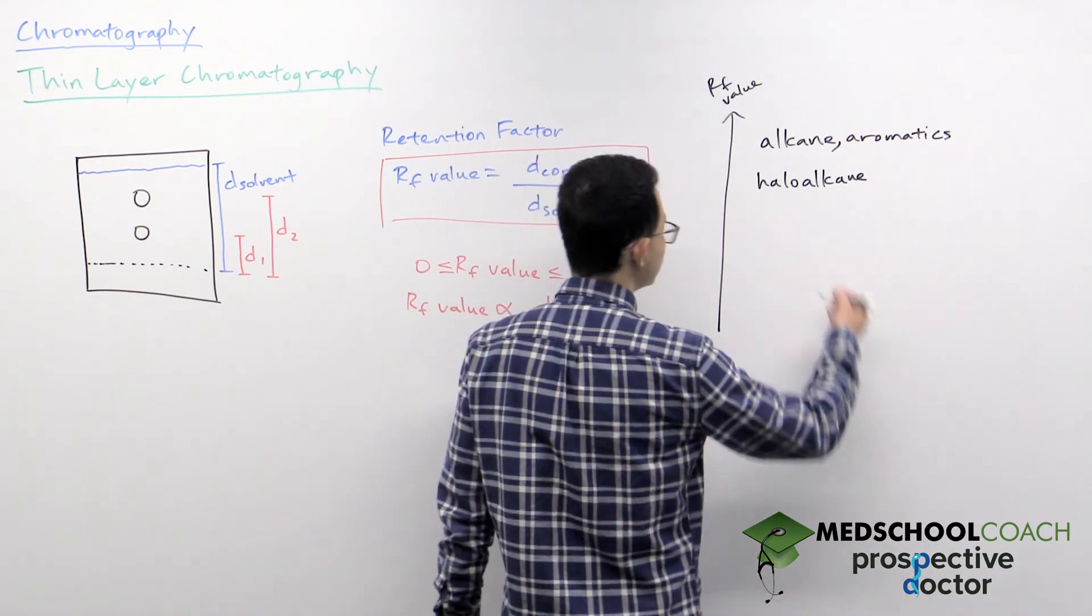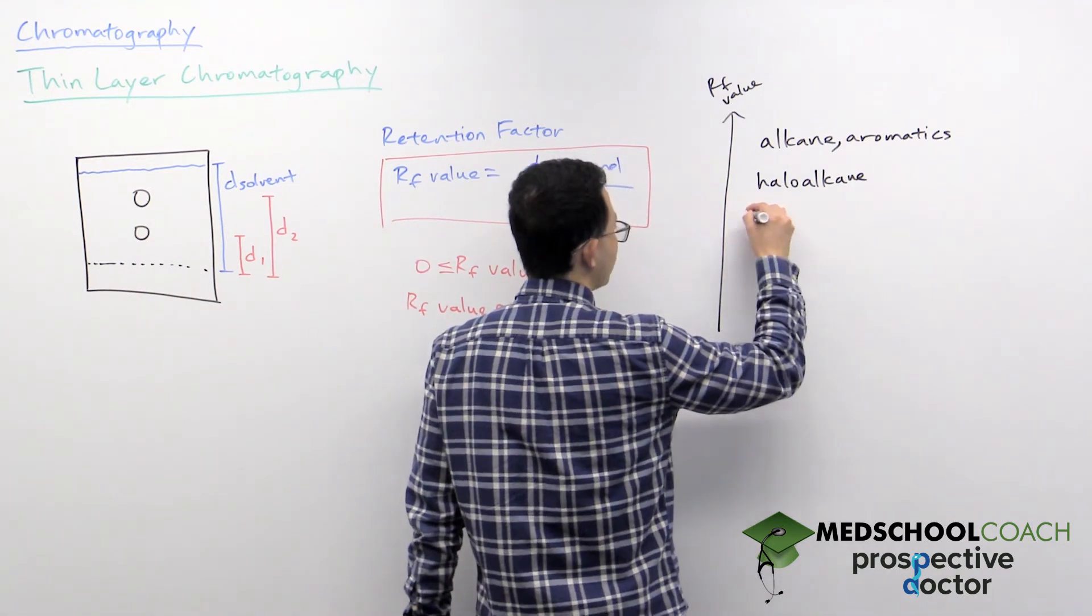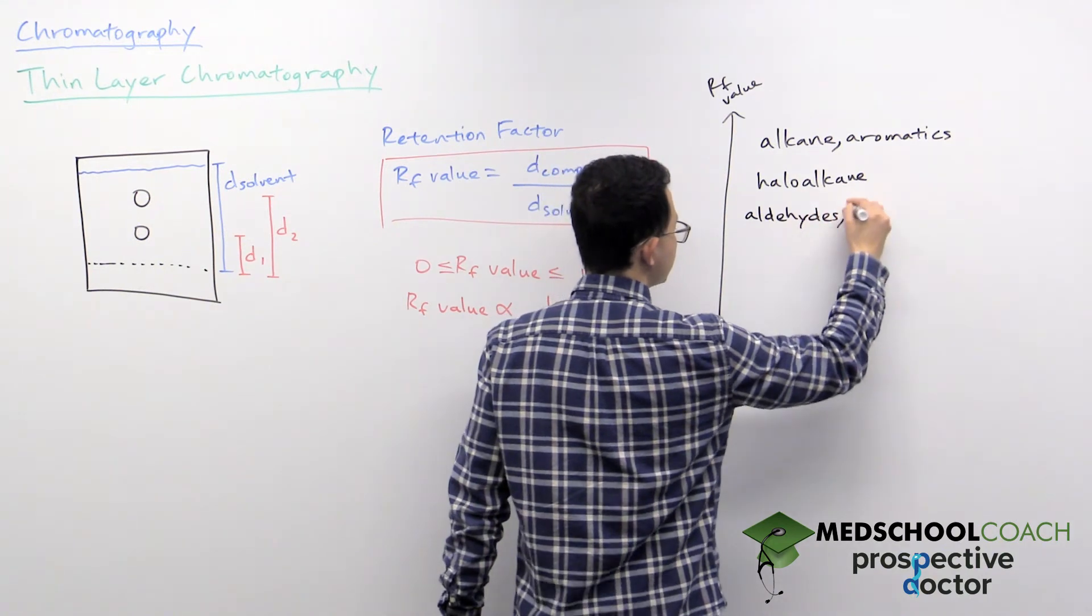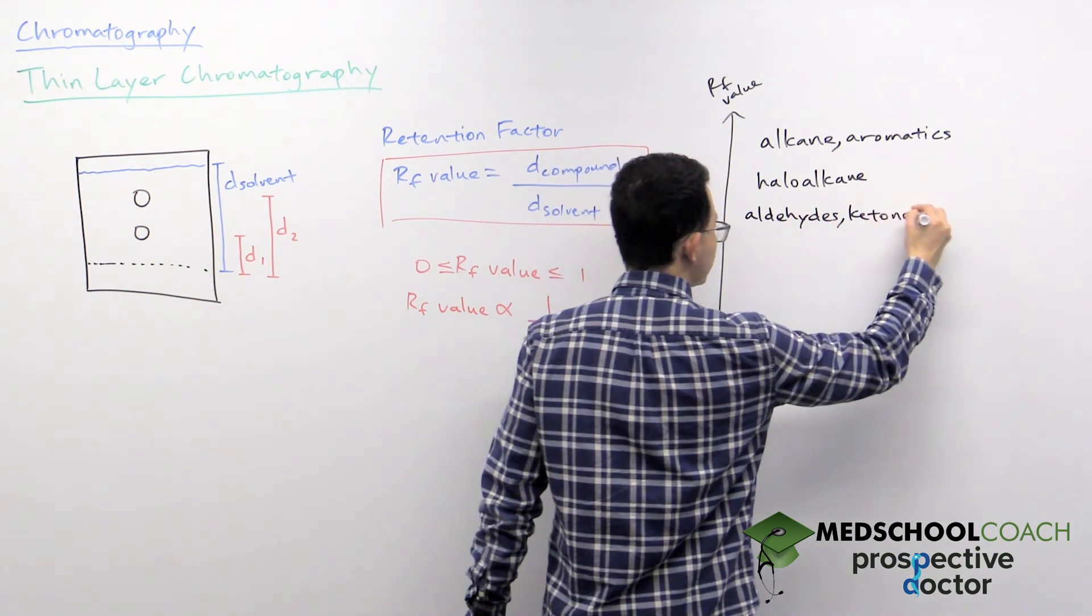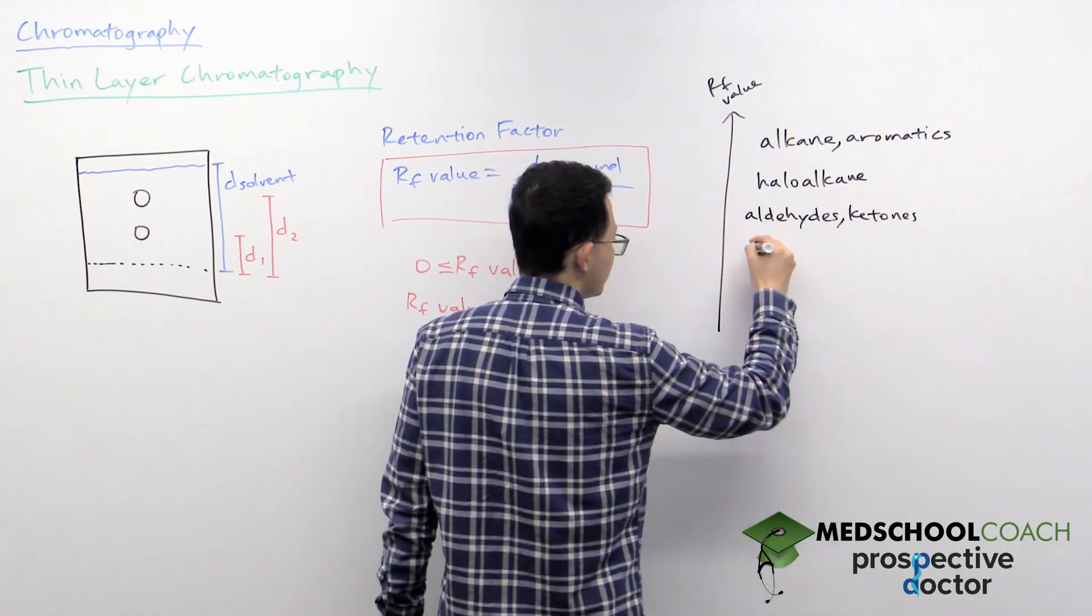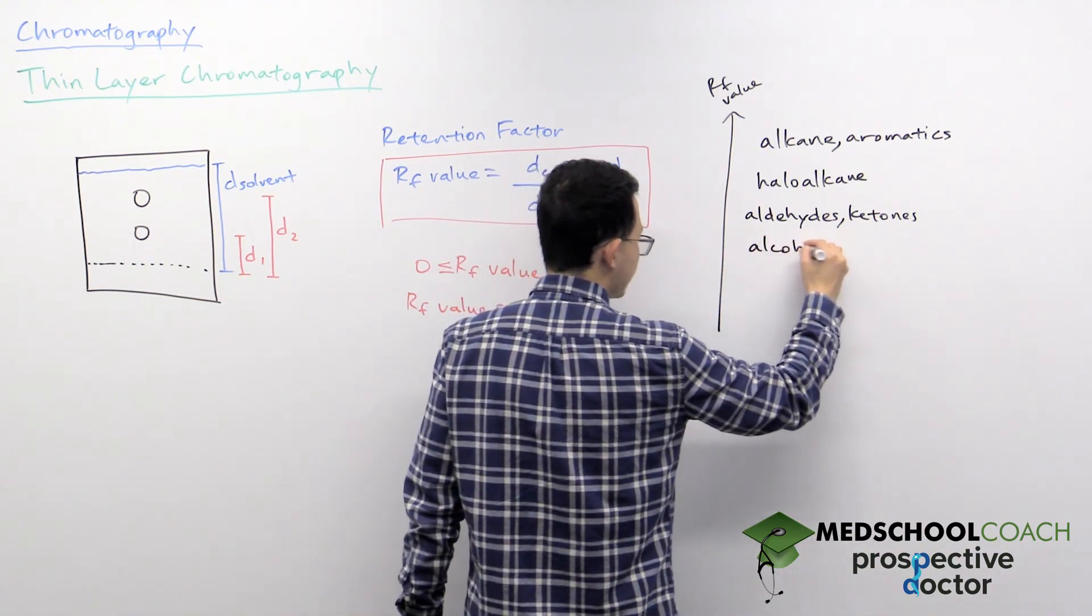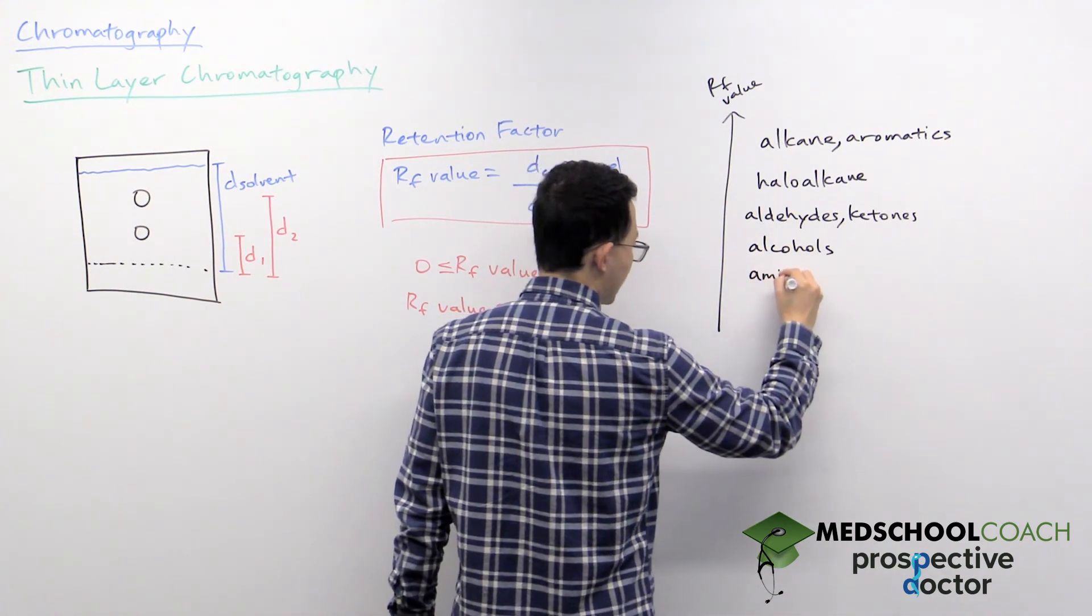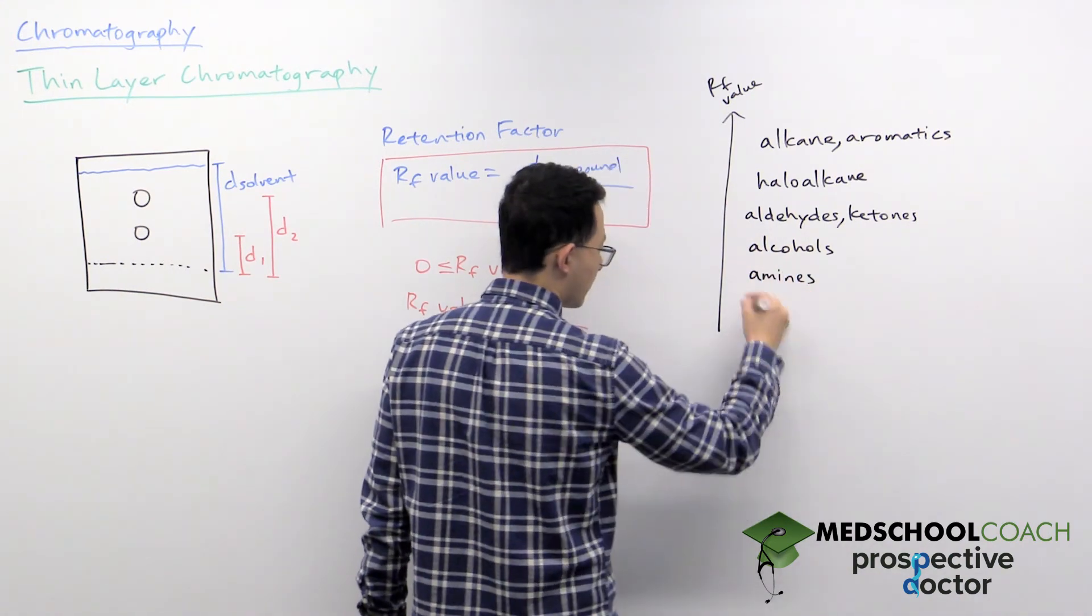You can then continue to more polar compounds like carbonyls. So aldehydes as well as ketones—they'll have average RF values. You can also move on to alcohols. Alcohols can hydrogen bond, they have lower RF values. You can also look at amines, even lower RF values.